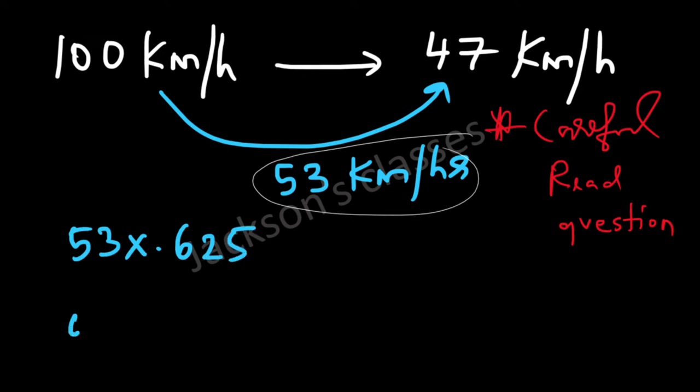Now 53 into 0.6, that's equal to 31.8. So again, this is a little bit greater than 31.8 because you have 0.625. So a little bit greater than 31.8.